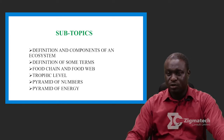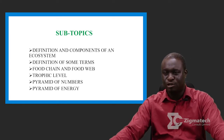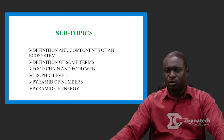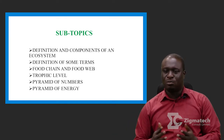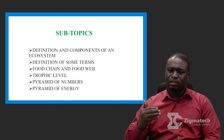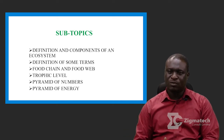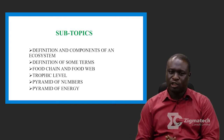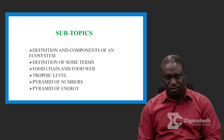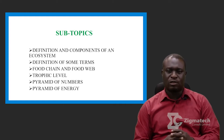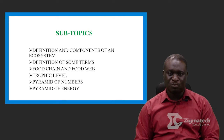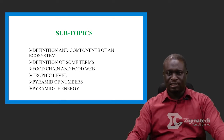Let's begin with the first one. We have definition and components of an ecosystem. We are also going to be talking about definition of some terms that are used when discussing an ecosystem. We're also going to be talking about food chain and food web. We're going to be looking at what we call trophic levels. We're also going to discuss pyramid of number and pyramid of energy. If you are set, let's take a look at them.